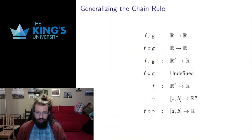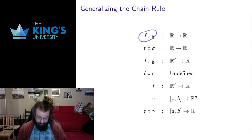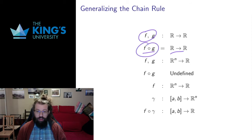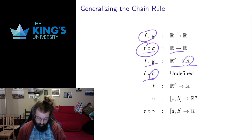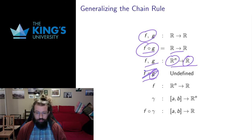The chain rule doesn't generalize directly. If I have two single variable functions I can compose them and still get a single variable function, so I need to know how to differentiate that composition. However, if I have two scalar fields, this composition doesn't even work because the output of G is the real numbers and the input of F is Rn — so this doesn't even make sense. The chain rule is not for the composition of two scalar fields.